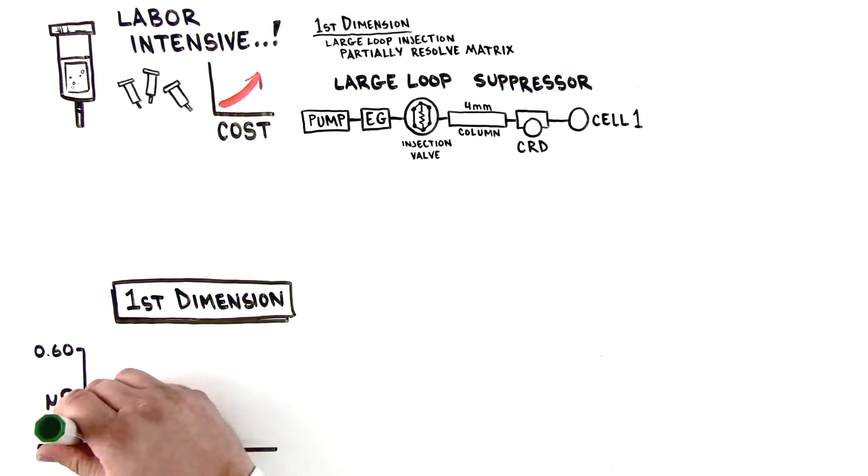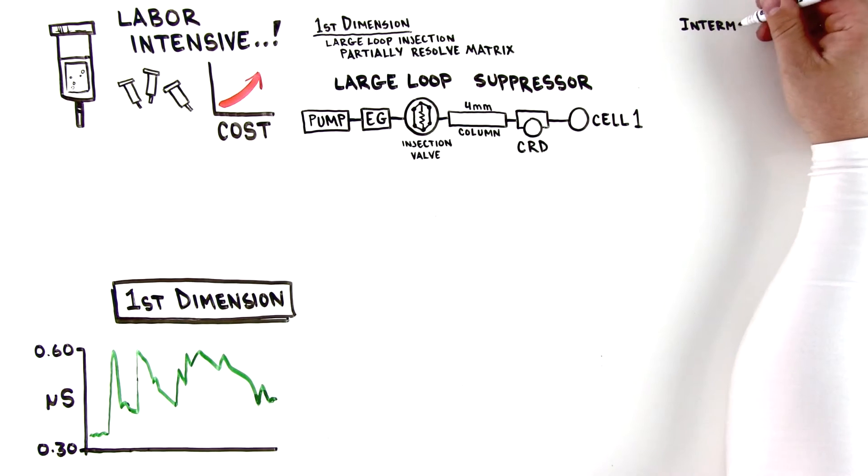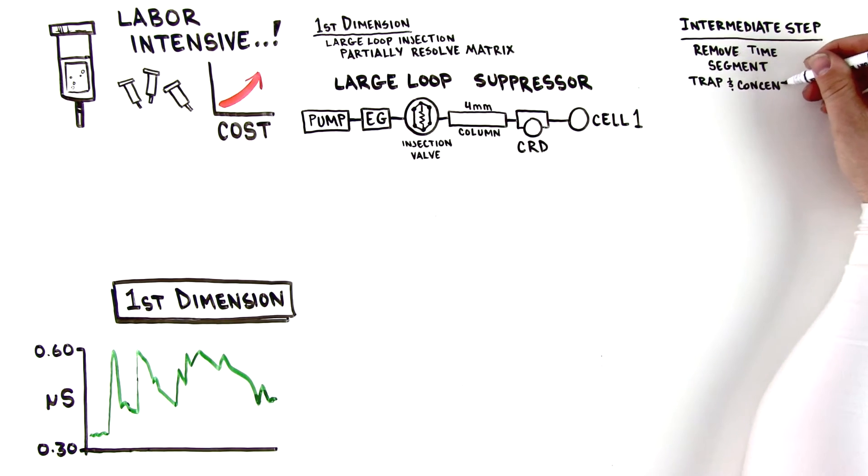First, sample loading into a four millimeter column allows a large sample injection volume due to the high capacity of the analytical column and higher selectivity for analytes of interest relative to the matrix ions.